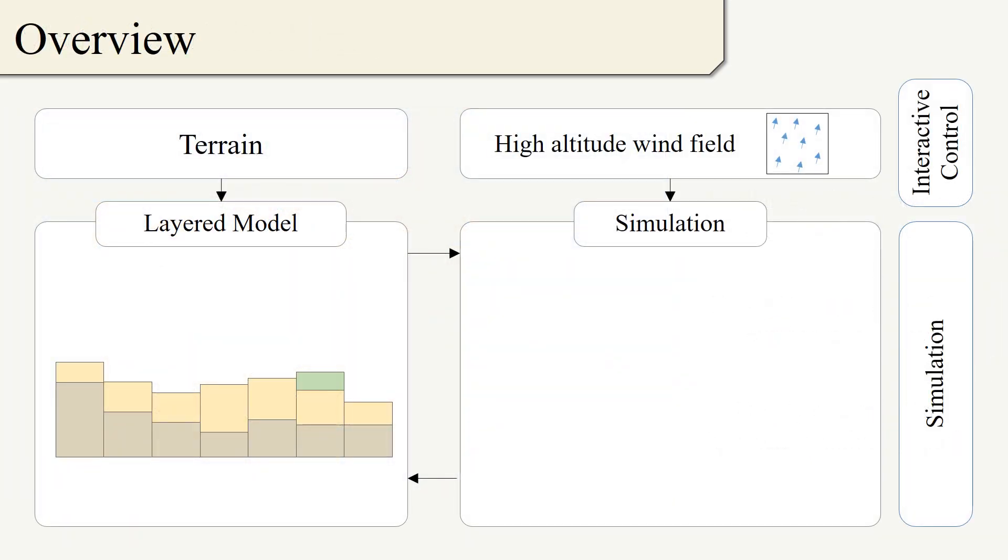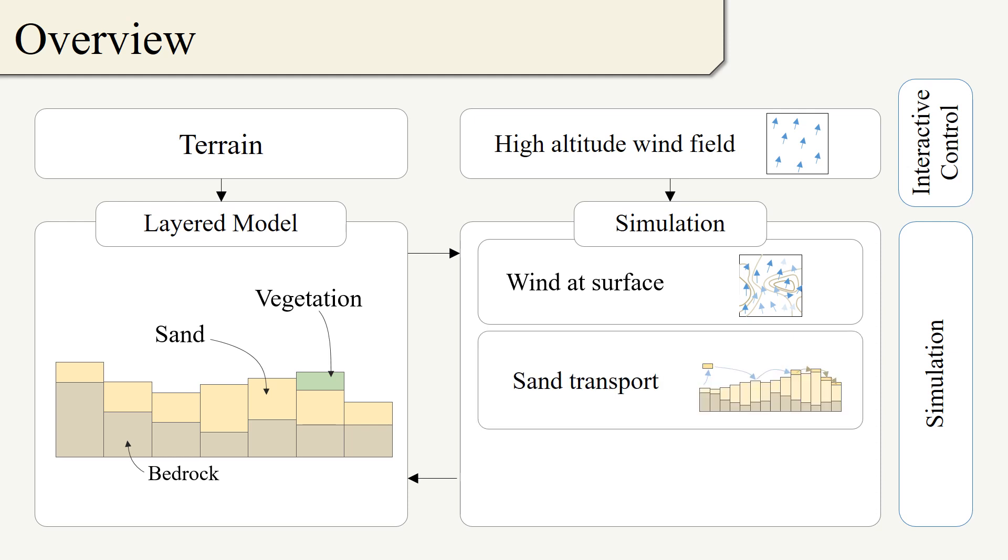We use a layered model of the terrain representing bedrock, sand, and vegetation. At the heart of our method is a procedural model for surface wind accounting for terrain relief, a sand transport algorithm modeling the different processes that create dunes, and the abrasion of bedrock due to sand transport.